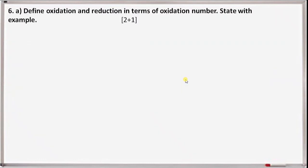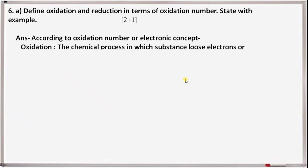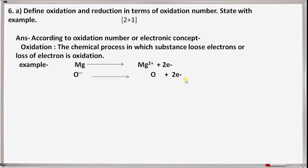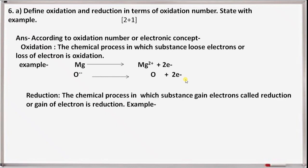Next question 6a: define oxidation and reduction in terms of oxidation number. According to the electronic concept, oxidation is the chemical process in which a substance loses electrons. Example: magnesium loses two electrons to become Mg²⁺; oxide O²⁻ loses two electrons to become oxygen. Reduction is the chemical process in which a substance gains electrons. Example: chlorine gains one electron to become Cl⁻; ferric Fe³⁺ gains one electron to become ferrous Fe²⁺.